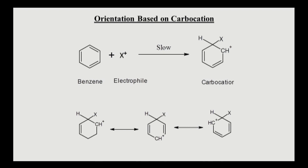The exact carbocation which is formed is a hybrid of all three resonance structures. The positive charge will be more on the ortho and para positions relative to the site of attack. Since dispersal of positive charge stabilizes the carbocation, the more the chances for dispersal of positive charge, the more is the stability of the carbocation, and hence greater is the reactivity of the compound towards electrophilic substitution.